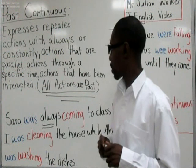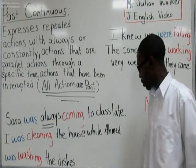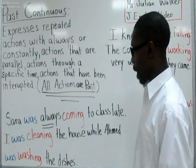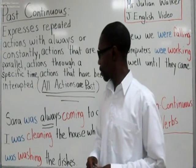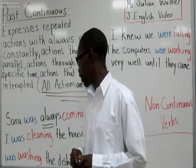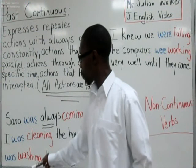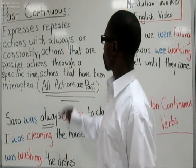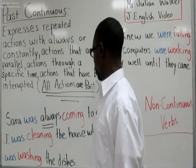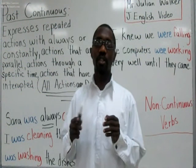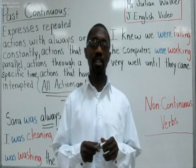Let's look at the second sentence: I was cleaning the house while Ahmed was washing the dishes. Was is the B form of the verb in the past tense; clean is the base form, then you add ing. Again, was is the B form in the past, and wash is the base form plus ing. This shows actions that are parallel — I was cleaning the house while Ahmed was washing the dishes — happening simultaneously, at the same time.